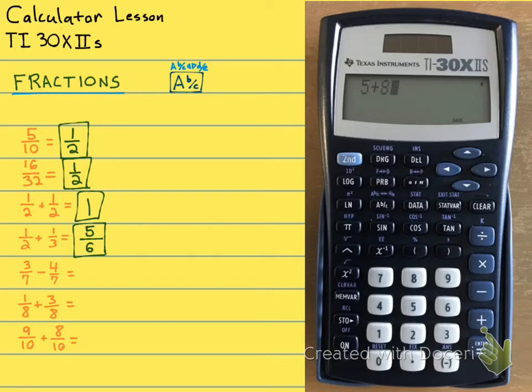Now, let's see what happens when we subtract. And I picked these fractions on purpose because this is 3 over 7 minus 4 over 7. So I am subtracting more than I start with. So I should end up with a negative number. So let's go ahead and plug them in. We're going to type in 3, ABC, 7, minus 4, ABC, 7, equals. And you should get a negative 1 over 7.